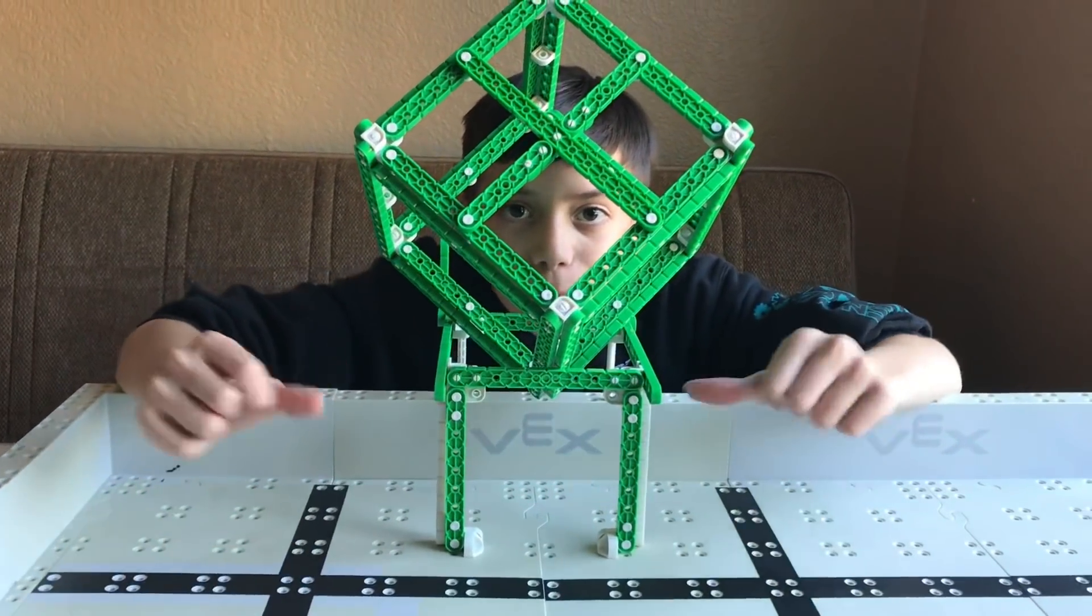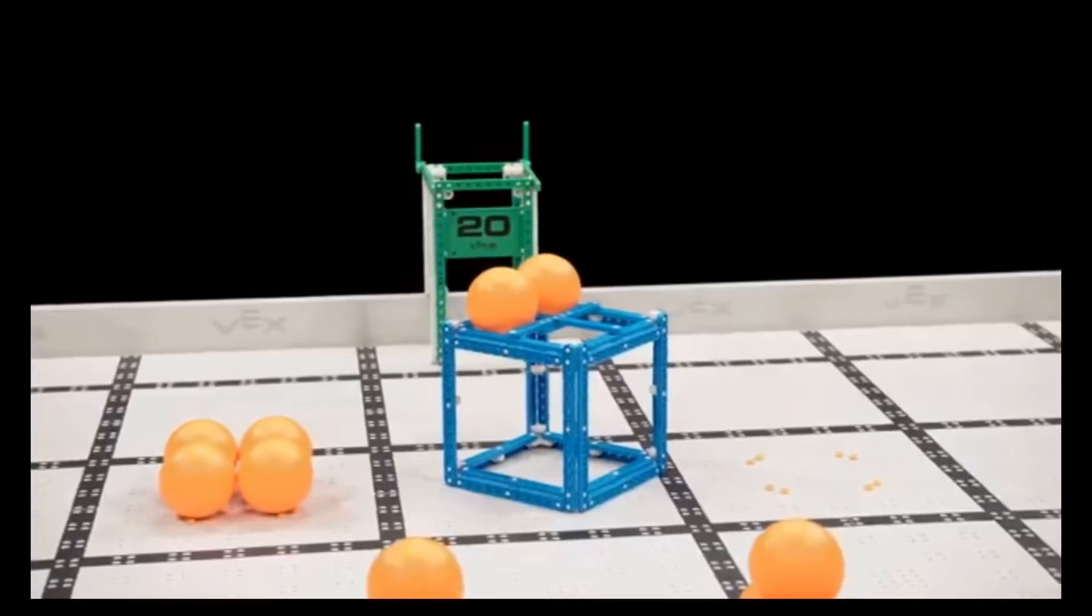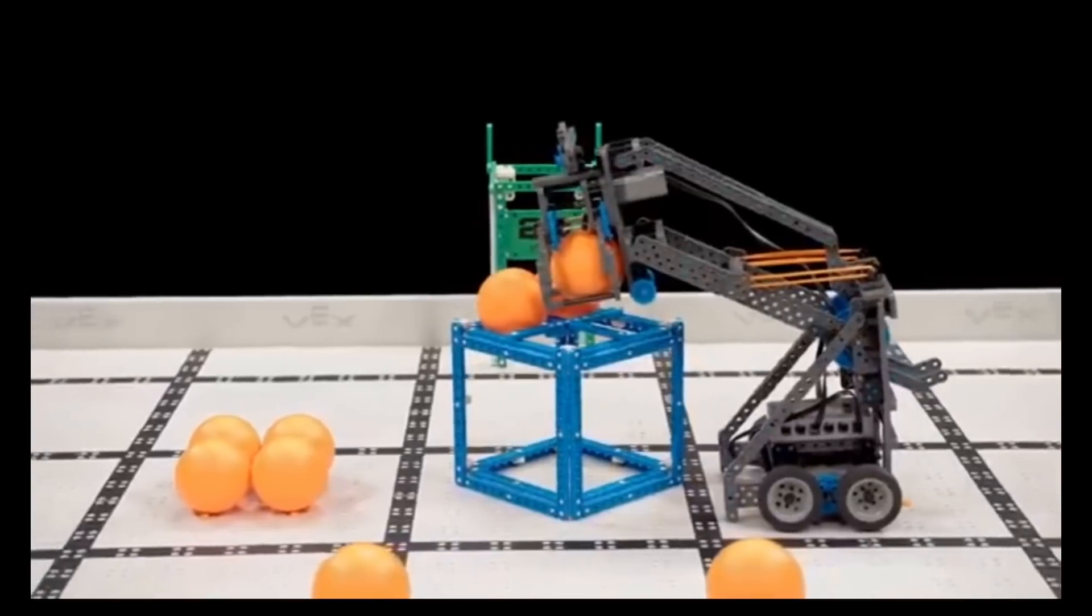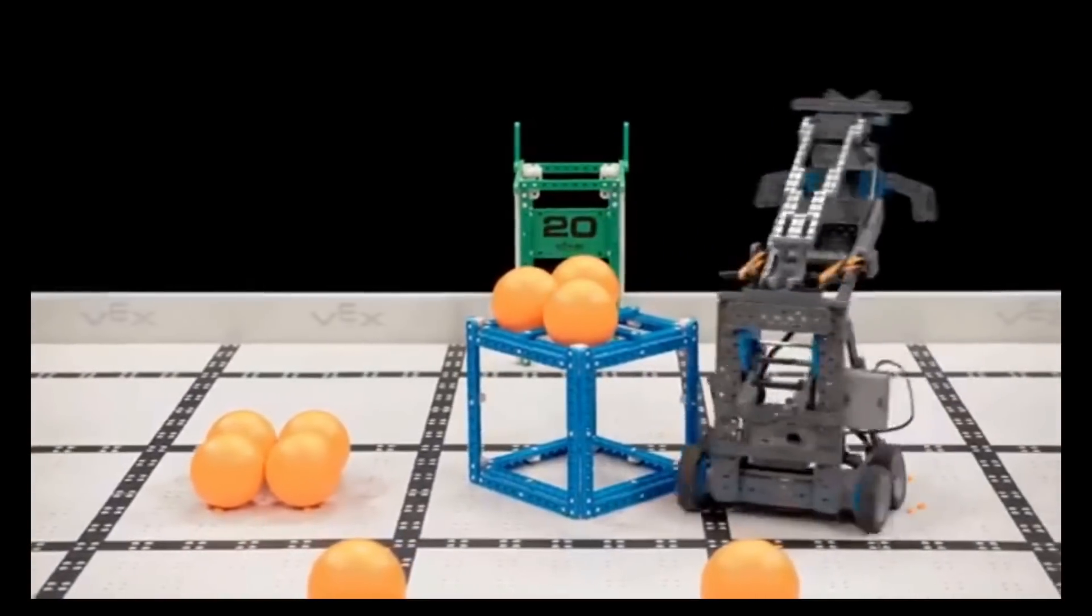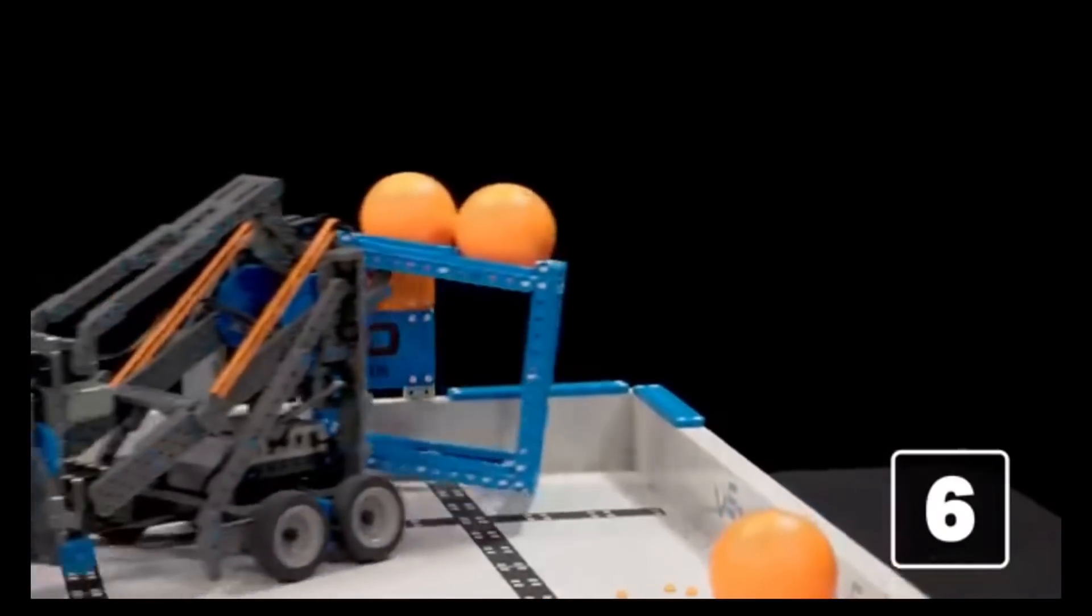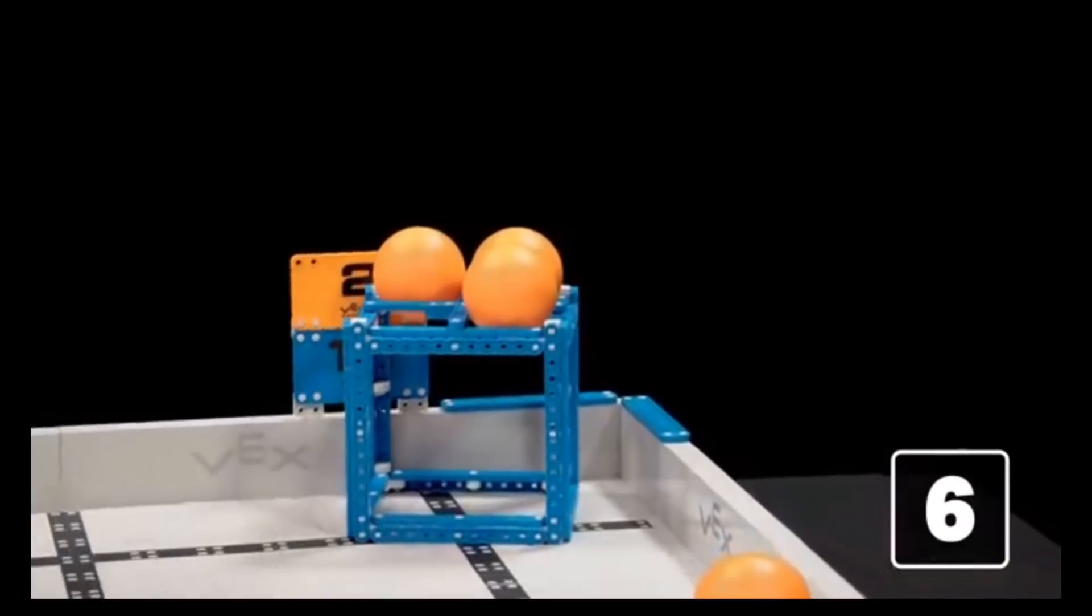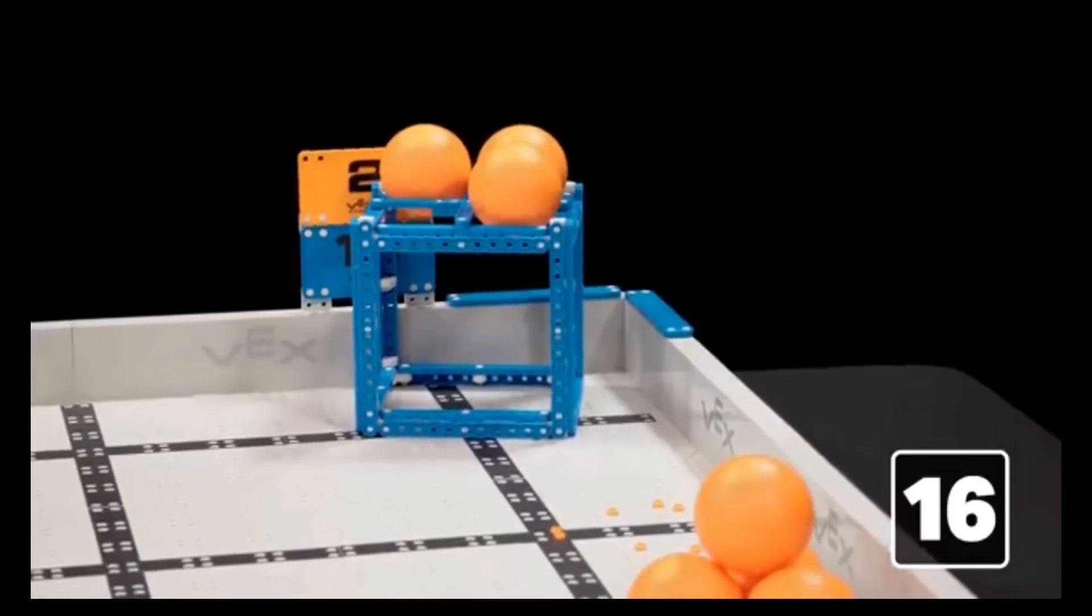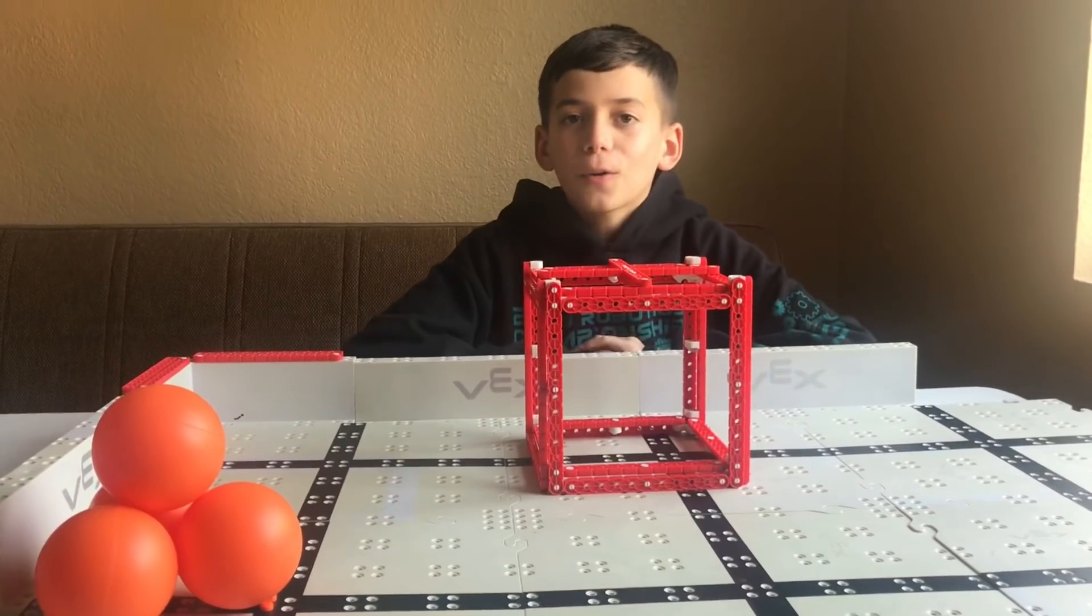Cubes and balls are scored independently of each other. So if a robot places three balls on top of a cube, that alliance has just earned six points. Then if they score that cube in a scoring zone, they have just earned 10 more points. That's a total of 16 points.